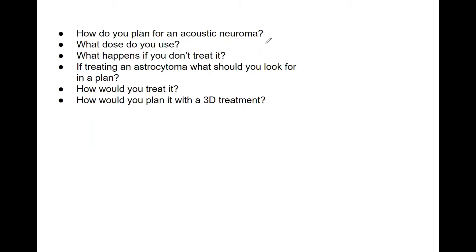How would you plan for an acoustic neuroma? What dose would you use, and what would happen if you don't treat it? For an acoustic neuroma, it's good to know what the term means — this is a benign tumor, slow growing, typically in the vestibular nerves of the inner ear or the brain. Normally you would do a surgical removal, or you could use SRS, or VMAT.